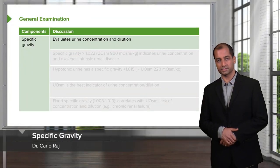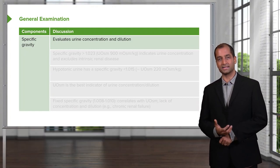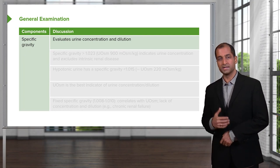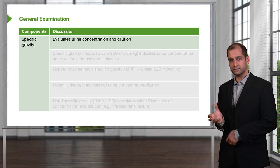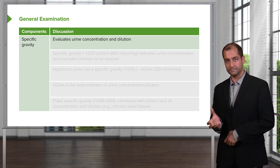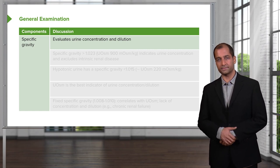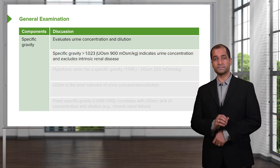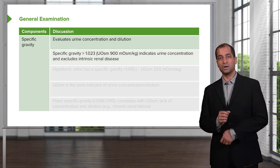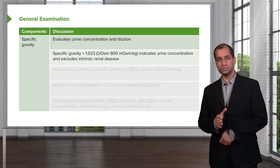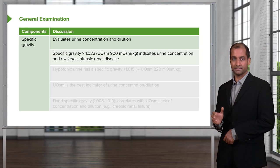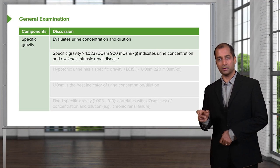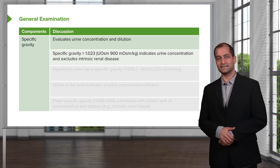Another component will be specific gravity. What's this mean? Literally, the gravity that the urine is exhibiting. Evaluate urine concentration and dilution. If your urine is concentrated, what color is it? Dark yellow. If your urine is concentrated, what do you expect the gravity to be? Obviously, it'll be increased. If your specific gravity is above 1.023, the usual limit is usually 1.010. Use 1010, 1.010 to make your life easier.